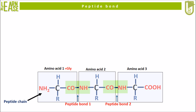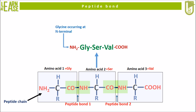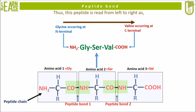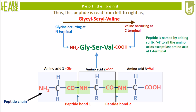For this tripeptide, let's illustrate that amino acid 1 is glycine, amino acid 2 is serine, and amino acid 3 is valine. This tripeptide is represented using the three-letter abbreviation of each amino acid as GLY-SER-VAL, where glycine has the free alpha amino group and valine has the free alpha carboxylic acid group. So glycine is at the N-terminal and valine is at the C-terminal; the peptide is read left to right as glycine, serine, valine. The peptide is named by adding the suffix "-yl" to all amino acids except the last amino acid at the C-terminal.